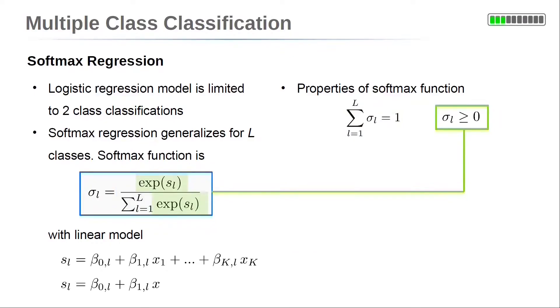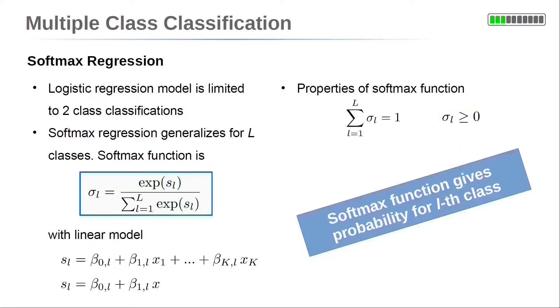Further, the value range of the softmax function is always positive because of the exponential functions. Consequently, the values of the softmax function can be regarded as probabilities. σ_l gives the probability for choosing the lth class.